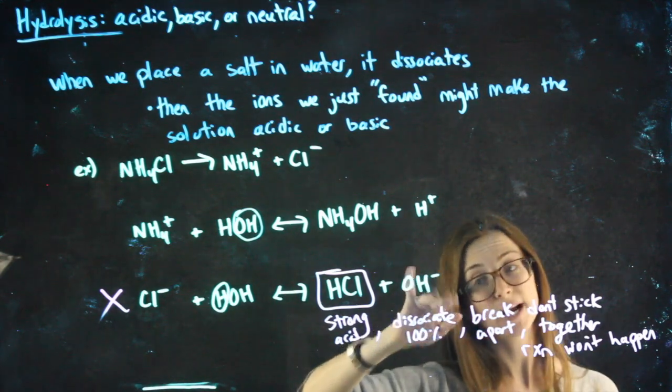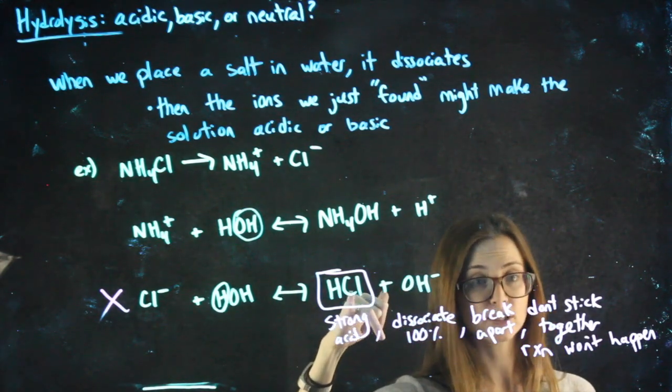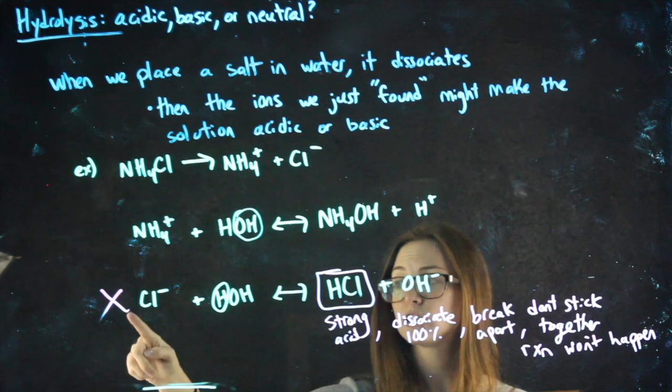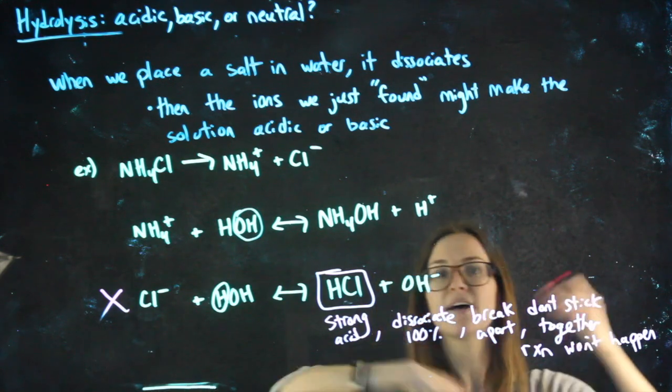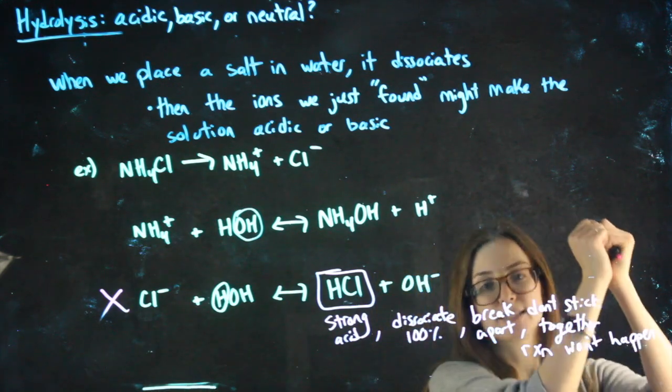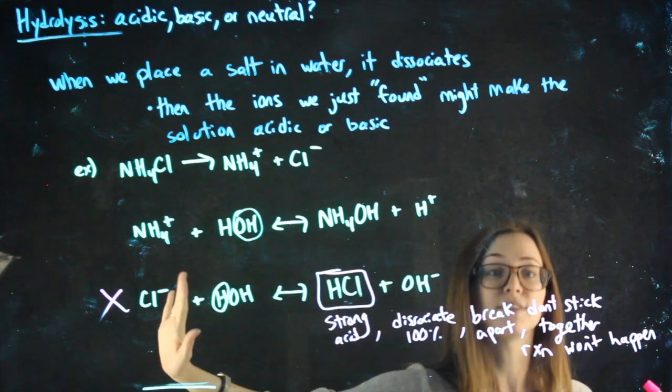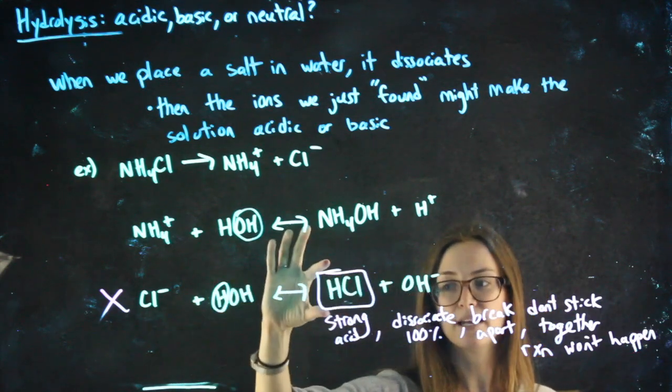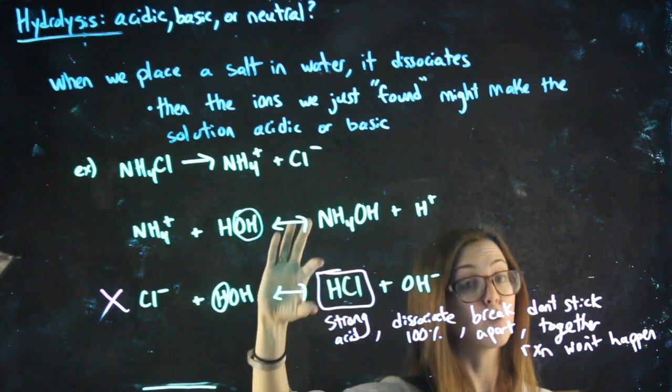So, if ever, when you look at one of these test reactions, you see something strong, whether it's an acid or a base, that reaction's not going to happen, because if it even ever did, as soon as that HCl stuck together, it would break right apart, as if it never happened. So, if anything strong is produced, that reaction won't happen.